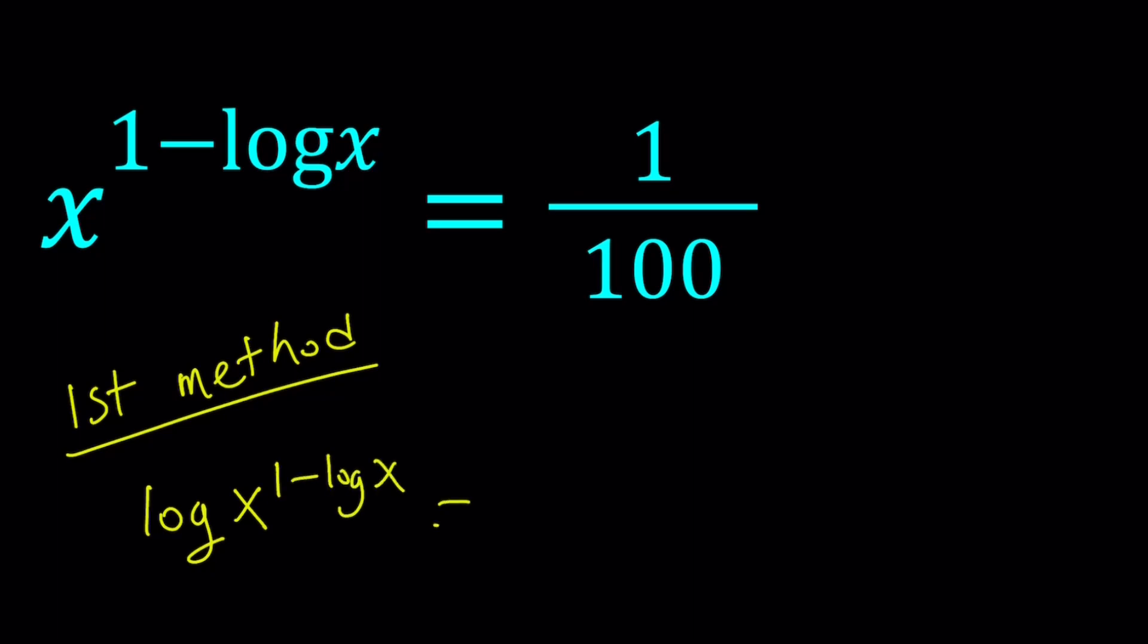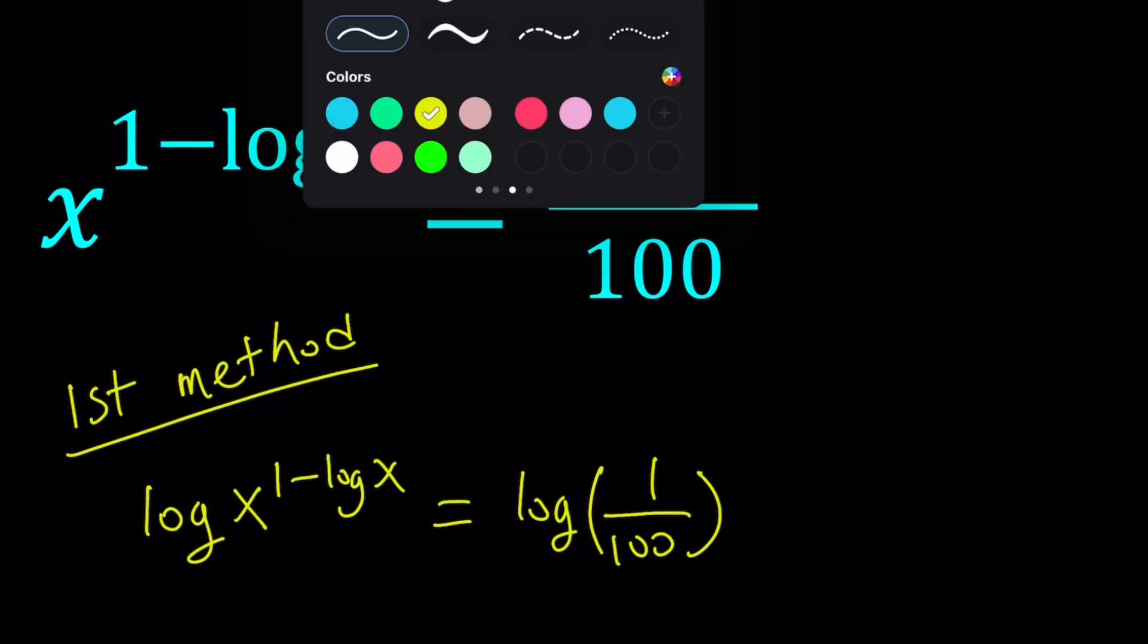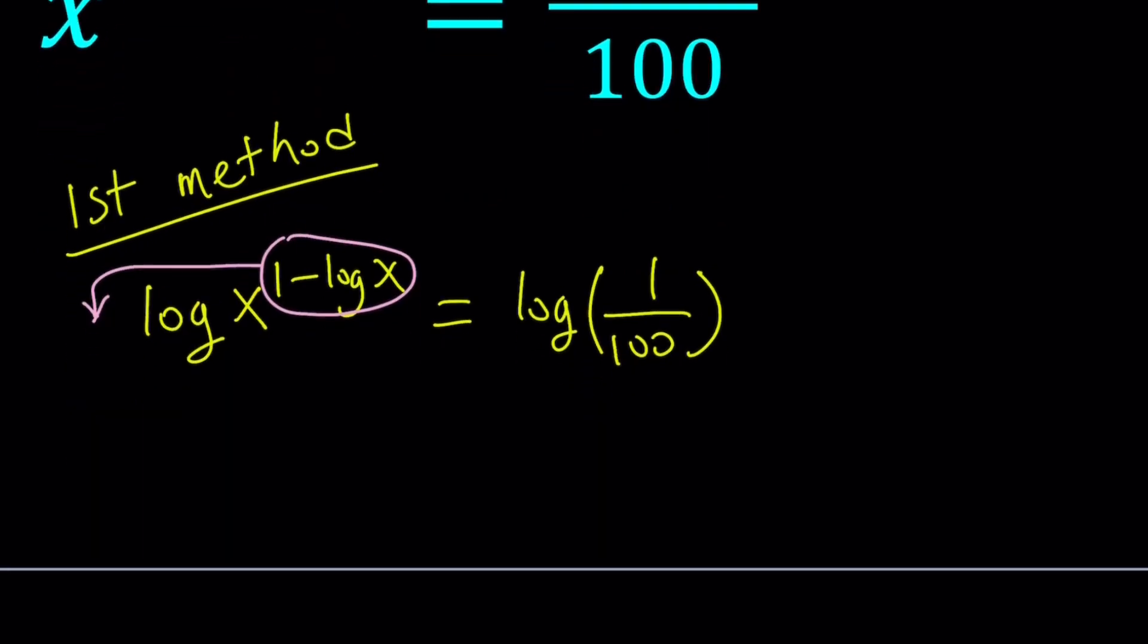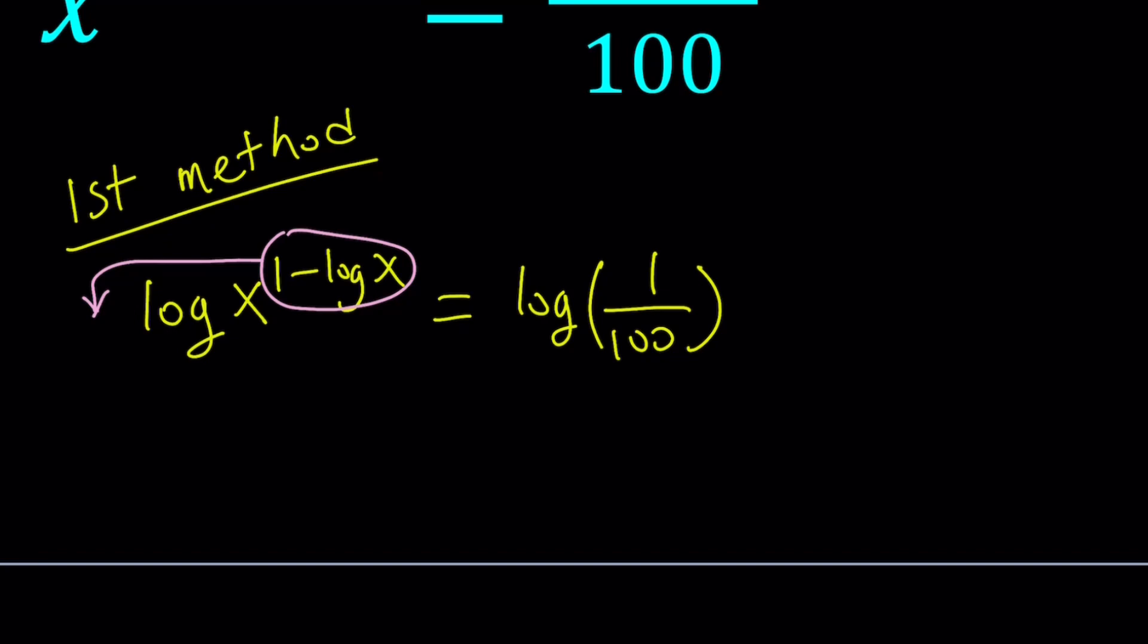In case you didn't know, for all the problems on this channel, log is always base 10. Now, properties of logs give us a lot of good things to do, such as moving this power to the front or bringing it down. So we can write this as 1 minus log x, multiplied by log x, equals log 1 over 100.